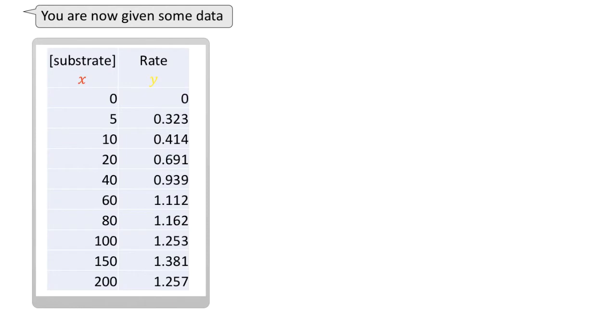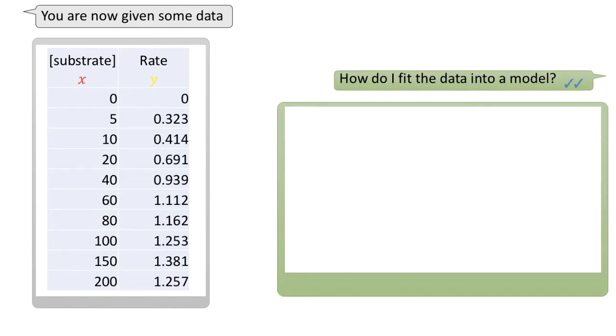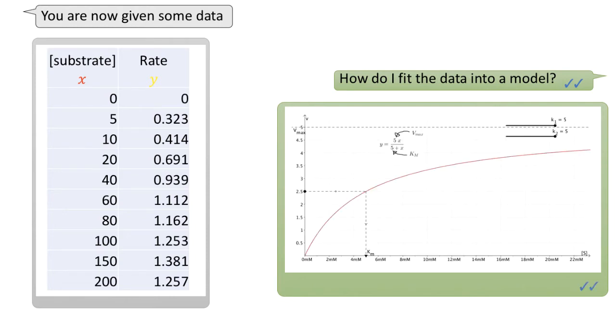Suppose now you are given some data, perhaps obtained from a lab experiment. But how do we fit this data into the model that we used in the previous tutorial? To do this, we will need to perform regression in order to find what the constants k1 and k2 are.